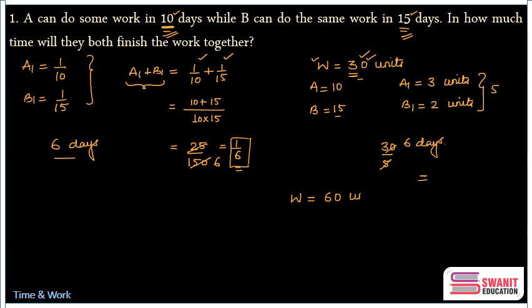So for example, I assume total work has 60 units. Therefore, A's one day work becomes 60 upon 10, that is 6 units. B's one day work becomes 60 upon 15, that is 4 units. So their one day work becomes 10 units. But because they have to do 60 units, they will be taking 6 days to finish the job. So a question becomes so simple by the use of this method.